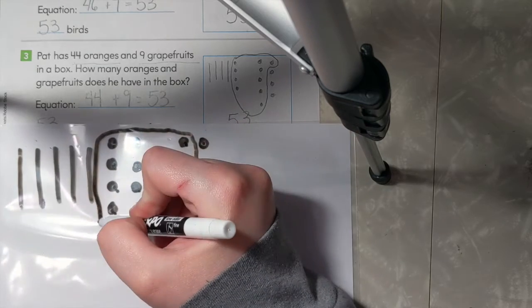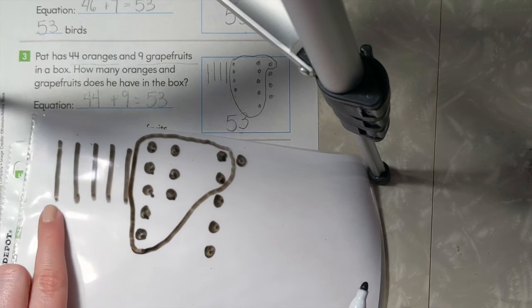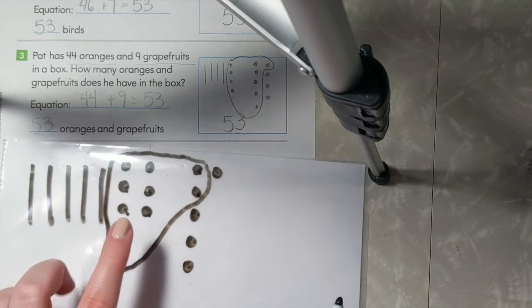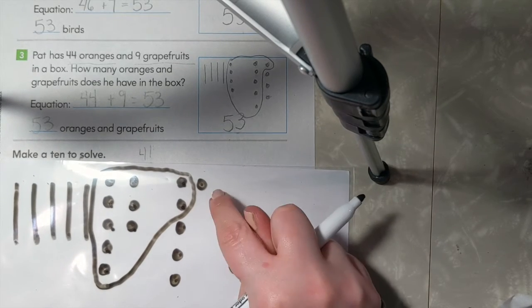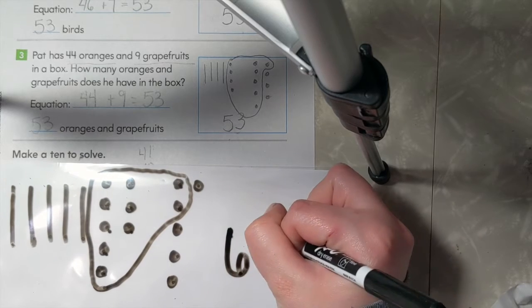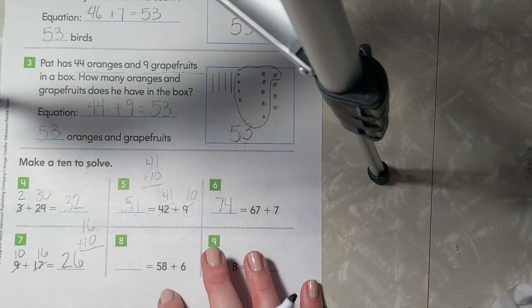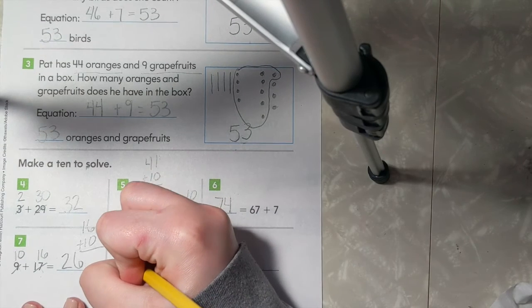8 plus 2 equals 10. So now I have 10, 20, 30, 40, 50, 60, and 1, 2, 3, 4 to make 64. So 58 plus 6 equals 64.